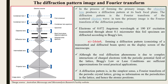Moving on to the diffraction pattern and Fourier transform: in the process of forming a primary image, the objective lens produces a diffraction pattern at its back focal plane, where the objective aperture is located. The diffraction pattern is a Fourier transform of the scattered electron wave, and in turn the primary image is a Fourier transform of the diffraction pattern.